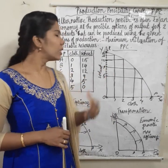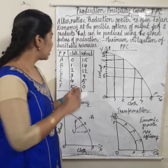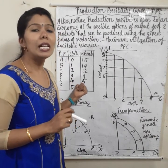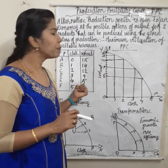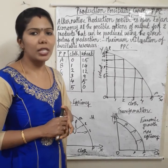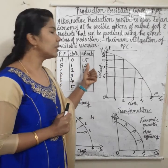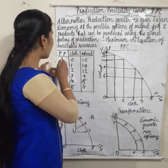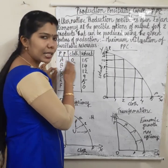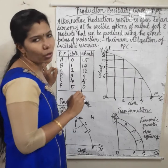Now we can explain the table and diagram. Here is the production possibility table. In the first column PP stands for production possibilities — the various alternative production possibilities available to an economy. We are assuming that there are only two commodities: cloth and wheat. In the first possibility A, that economy produces 0 units of cloth and 15 units of wheat.